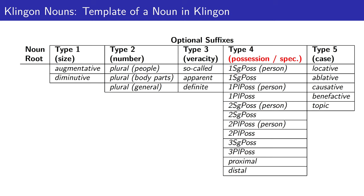A type 4 suffix will encode information regarding possession or specification. If the noun root is a person, that noun could be marked for possession, specifically indicating a first person singular possessor. There is a different first person singular possessor suffix if the noun root is not a person. If the noun root is a person, it could also have a first person plural possessor, or there could be a first person plural possessor referring to something that is not a person.